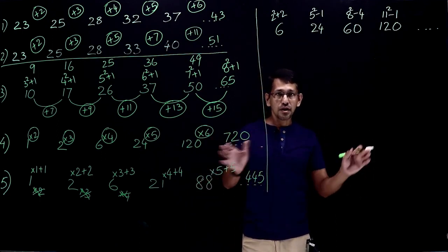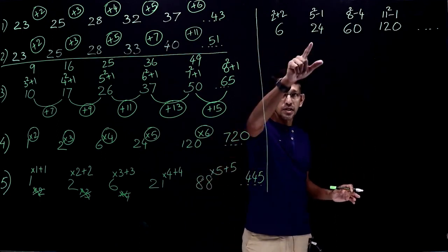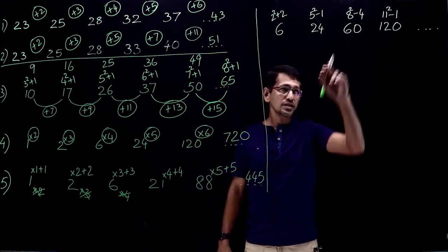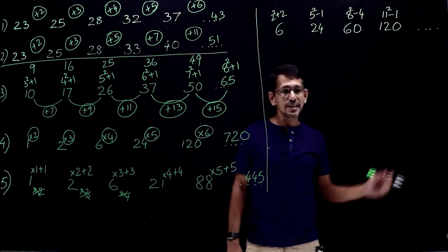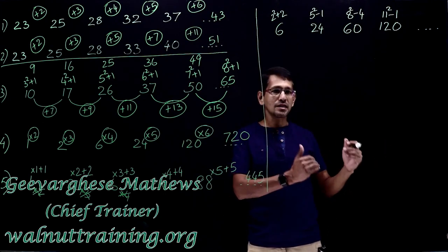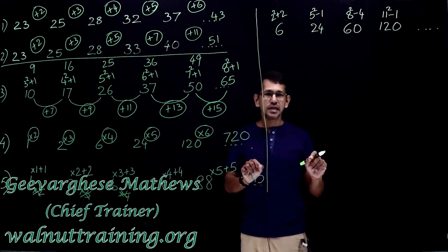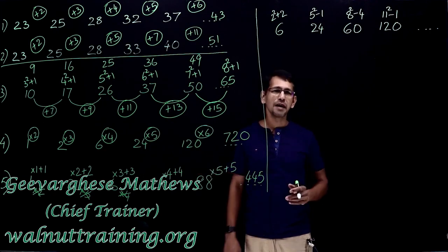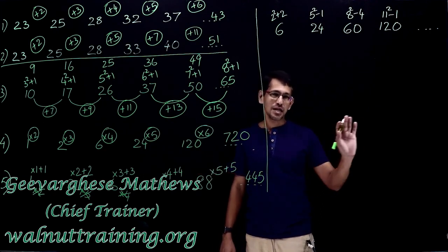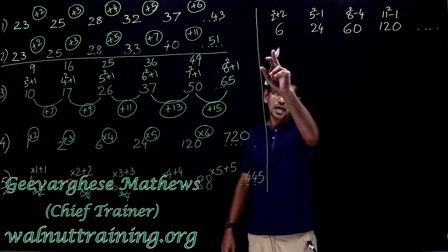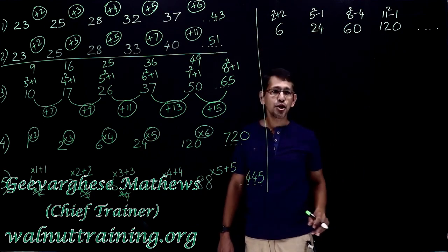So squares doesn't work. How about differences? Check out the differences. First difference is 18, next difference is 36, next difference is 60. If you go for the next level of differences, probably you may get a pattern, but that's time consuming. It's a bit sticky. Stay away from those kind of methods. Rather than that, instead of squares, let's look at cubes.